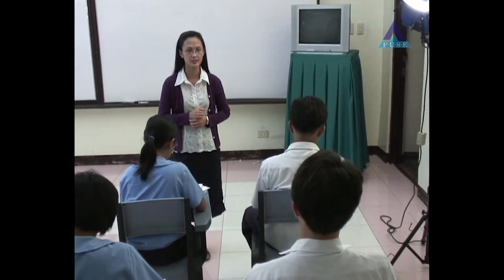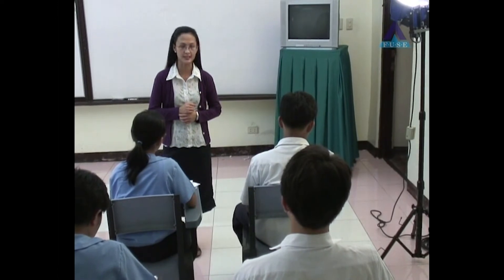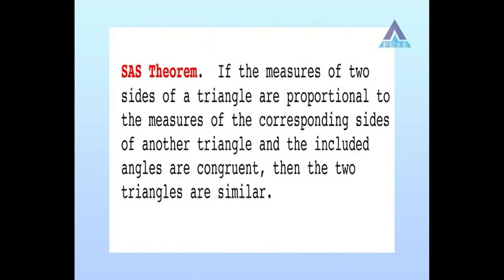Now we go to the next theorem, which is called the SAS theorem. SAS theorem: If the measures of two sides of a triangle are proportional to the measures of the corresponding sides of another triangle and the included angles are congruent, then the two triangles are similar.